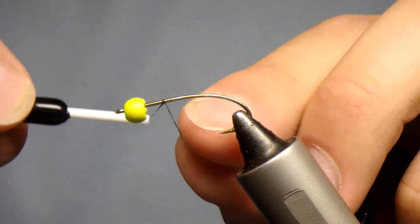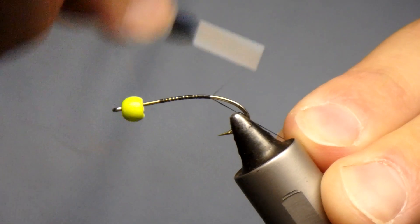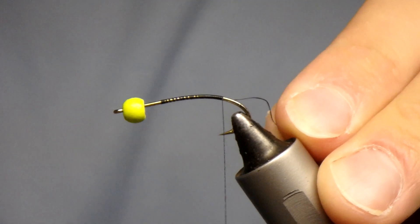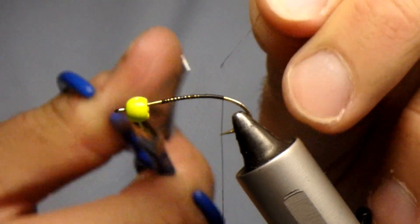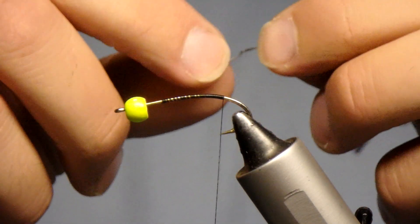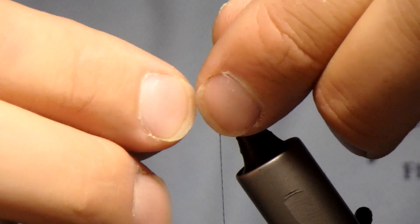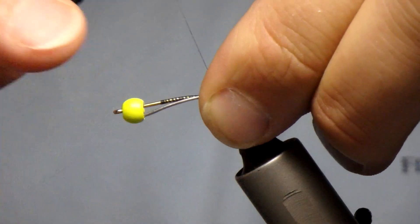So we're going to start this fly out by starting up and tying back towards the bend of the hook. I'm going to nip off this tag end and start by tying your wire in. So I cut a piece of wire here and I folded it in half.